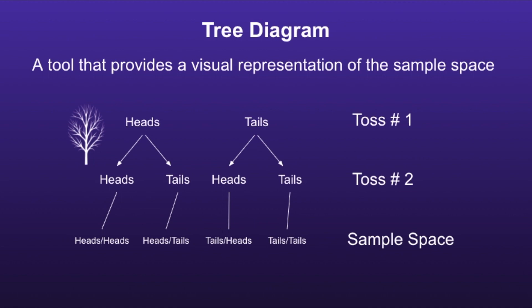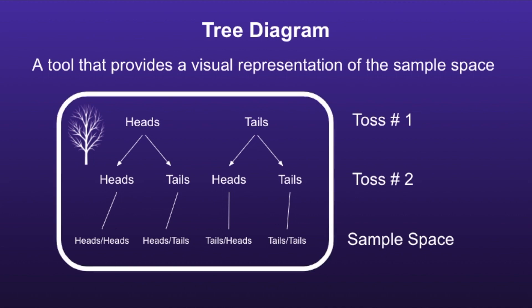A tree diagram is a tool that provides a visual representation of the sample space. You can see the actual tree diagram here. They call it a tree diagram because the arrows are similar to the branches on a tree. If you look at the bottom of the tree diagram, you will see that same sample space as before.